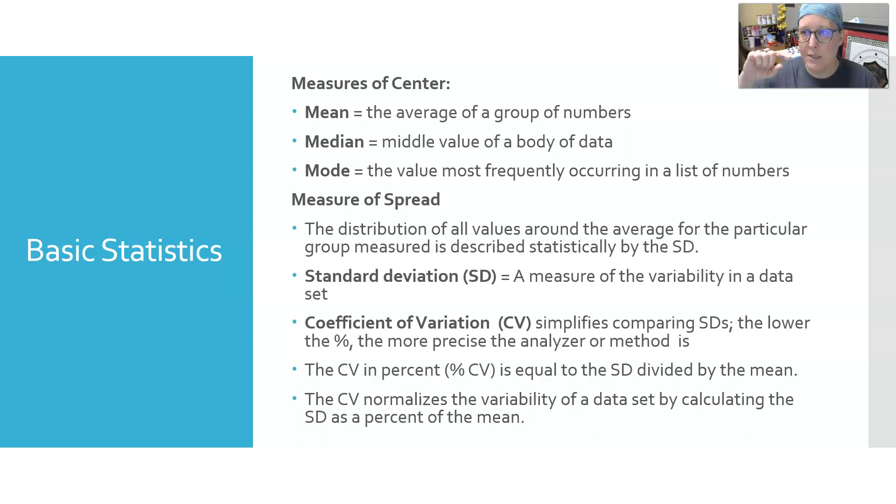That means if you plot the points together, the variability is how close to the mean or how far from the mean they're spread. Another measure of spread is the coefficient of variation, which simplifies comparing standard deviations. The lower the percentage, the more precise the analyzer or method is. The CV in percent is calculated by taking the standard deviation, dividing it by the mean, then times 100.